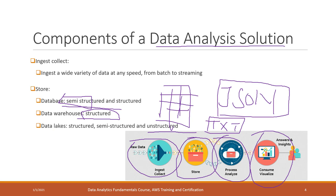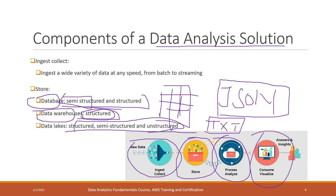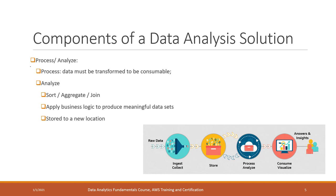For structured or semi-structured data, we can use a database to store those data — we will introduce different types of databases in the data mining class. For structured data, we can also use a data warehouse, which is a more powerful component that supports complicated queries. For all those data types, we can also save them in a data lake — a relatively new concept that is a central repository hosting all the data you need, which can be structured, semi-structured, and unstructured. Once the data is stored, we need to process and analyze it so it can be in a format we can visualize or create insights from.